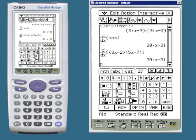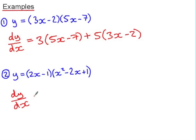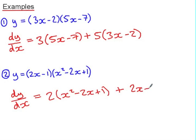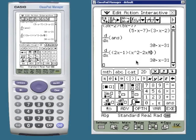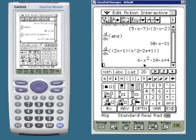In example number 2, dy/dx is the derivative of the first function multiplied by the second function, plus the derivative of the second function — that's 2x take 2. Now be careful here: we do need brackets because we're multiplying this derivative by the first function. So the functions are 2x take 1 and x squared take 2x plus 1. The calculator simplifies by expanding and collecting like terms.